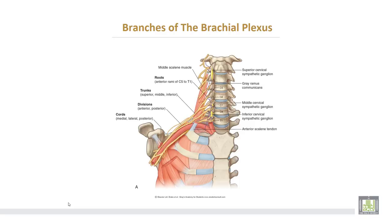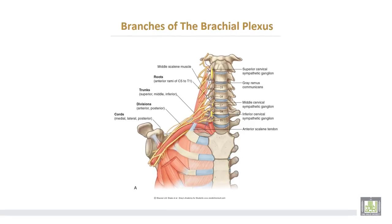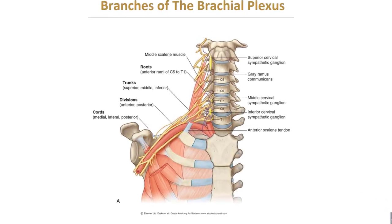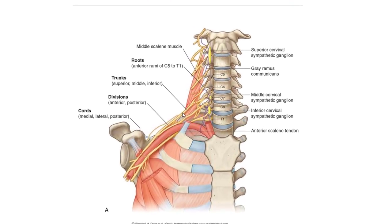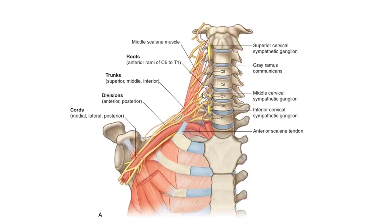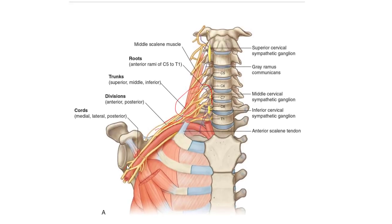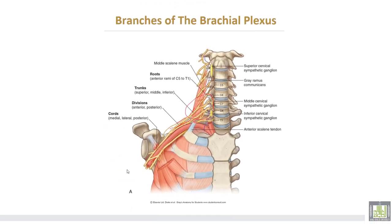This shows the roots and trunks of the brachial plexus. This stage lies at the lower part of the neck. Then the divisions of the trunks are behind the clavicle, and the cords lie in the axilla.